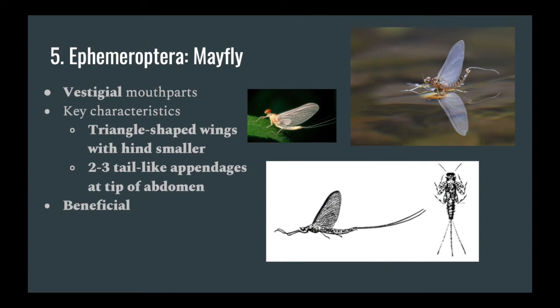Ephemeroptera, often called mayflies, are aquatic species and are extremely good indicators of good water quality. They typically have large triangular forewings with smaller hind wings, and at the end of their abdomen there are two or three long string-like appendages that may look like tails.